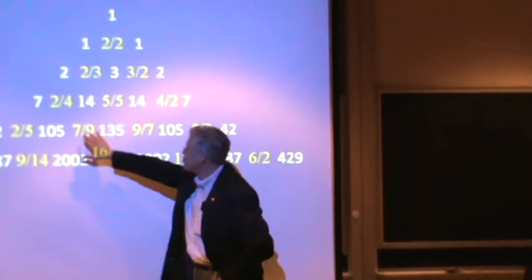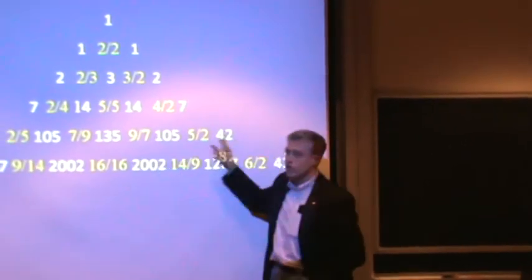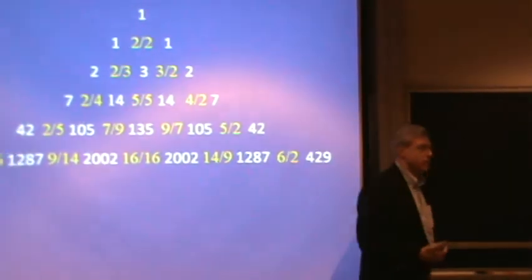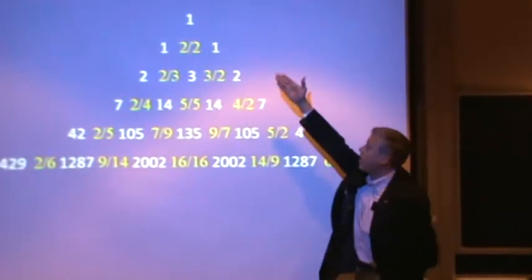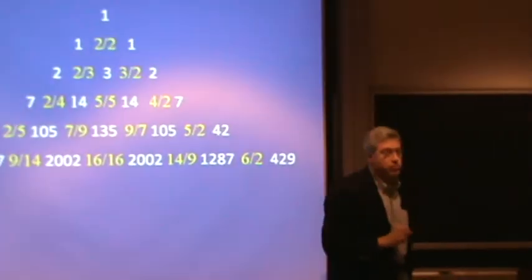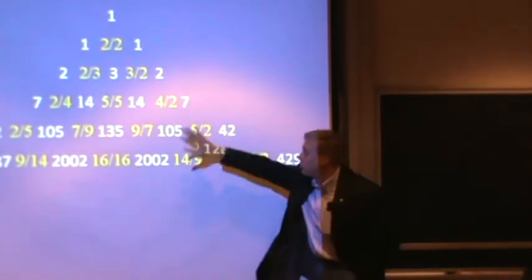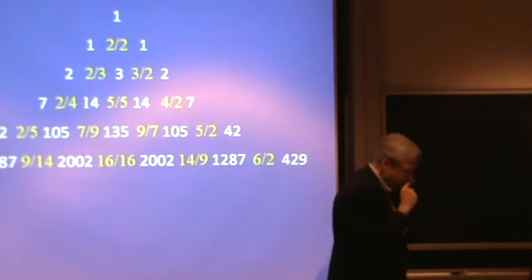Once you know what these ratios are, if you know the first entry in any row and you know the ratios, that uniquely determines the rest of the entries in that row. So knowing that there is a single one-by-one alternating sign matrix, and knowing what the rules are for the ratios, that uniquely determines all of the entries in this table.